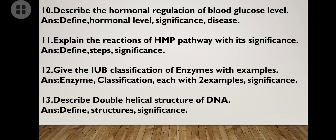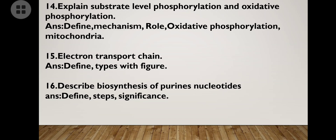Explain the significance and reactions of the HMP pathway — also called the pentose phosphate pathway. Define it, write the steps and significance. Then IUB classification of enzymes: write the enzyme classification first, then classify each group with two examples, and at last write the significance.